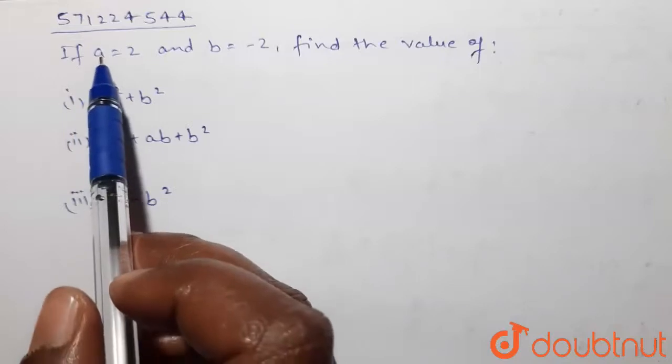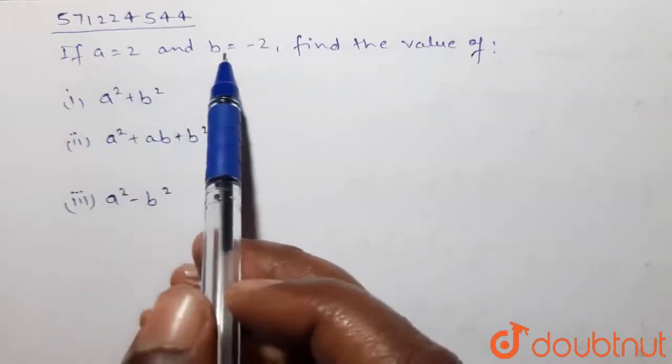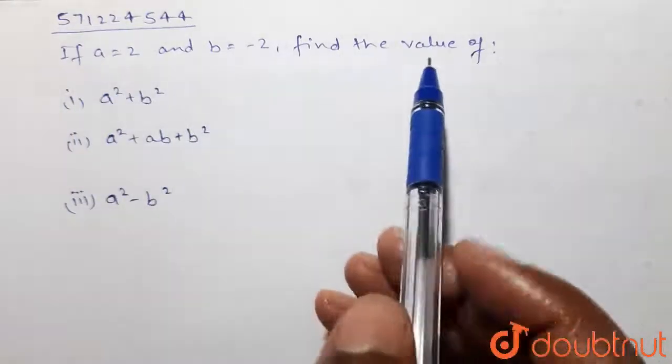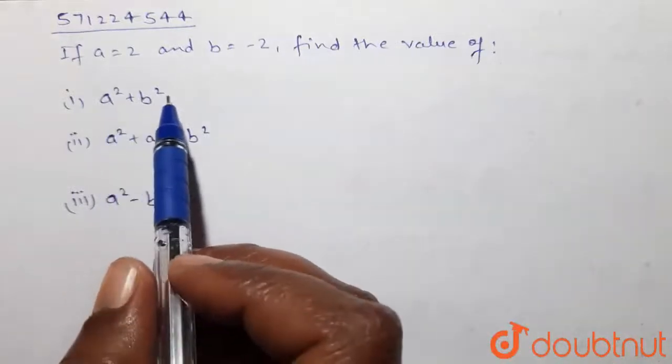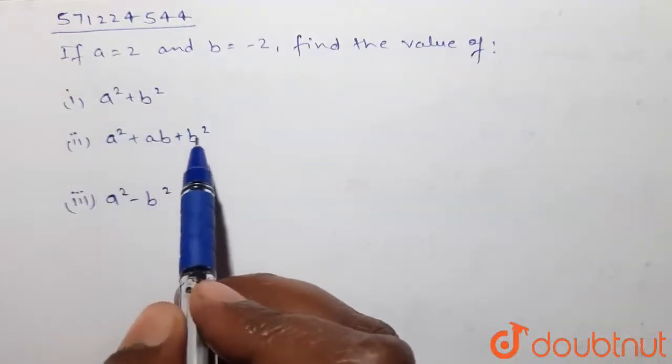We are given the value of a and b: a equals 2 and b equals -2. Then we have to find the value of a² + b², a² + ab + b², and a² - b².